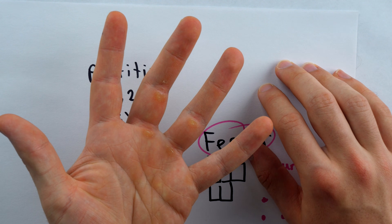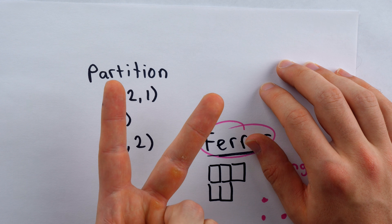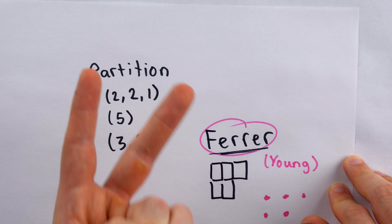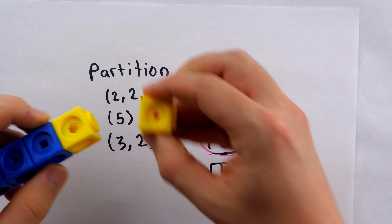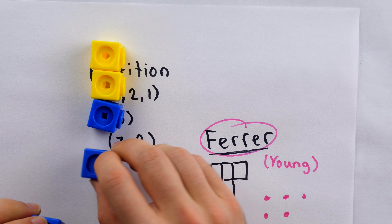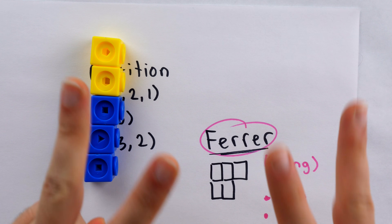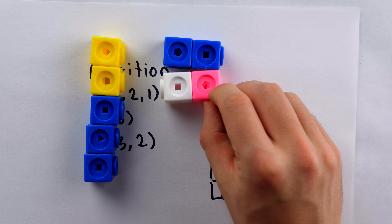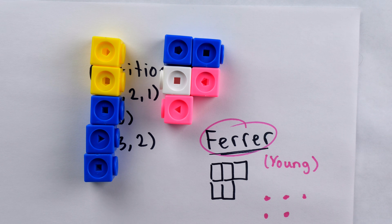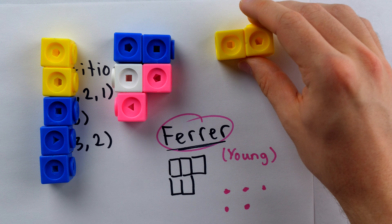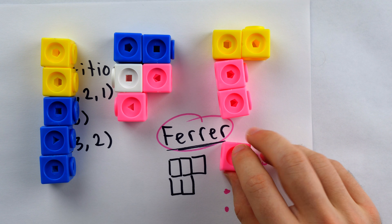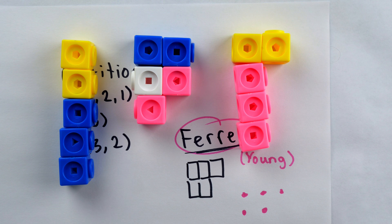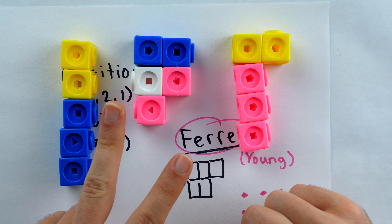A separate question would be: how many ways can we partition five into parts of at most two? Before, we were thinking at most two parts — you can't have more than two parts. But now we're saying at most two means each part is two; you can't have a part that's more than two. Well, we could have the partition where every part is just one: 1+1+1+1+1. Another option would be the partition (2, 2, 1). And then there's also the partition (2, 1, 1, 1), which is 2+1+1+1. So there are three partitions of five into parts that are at most two.